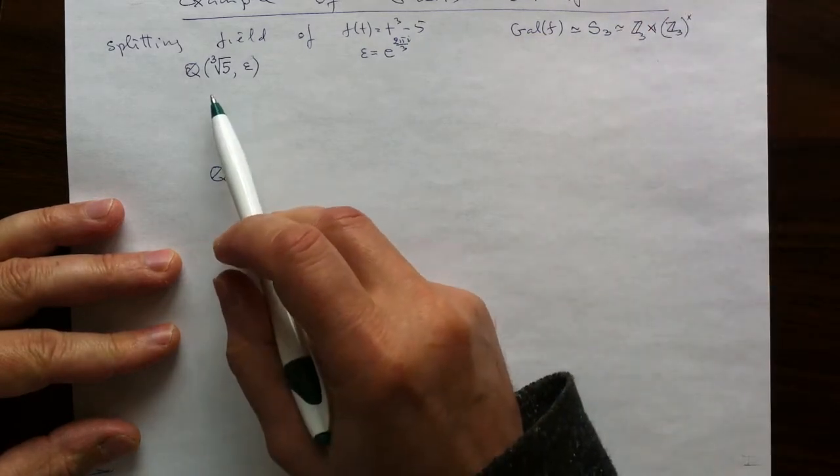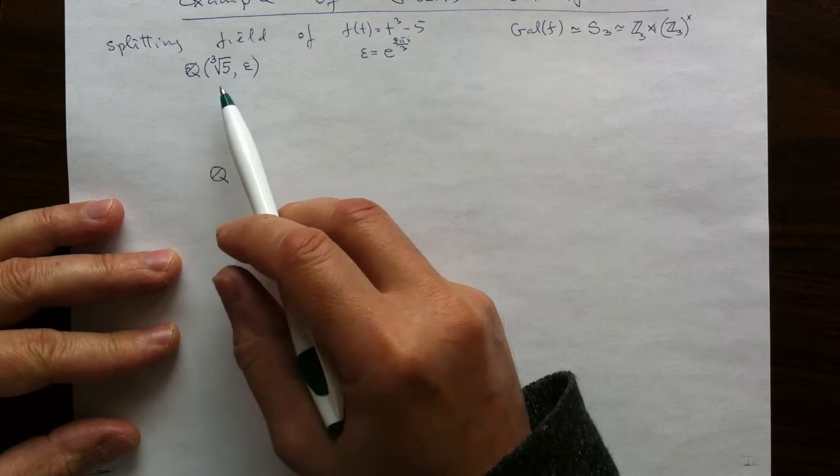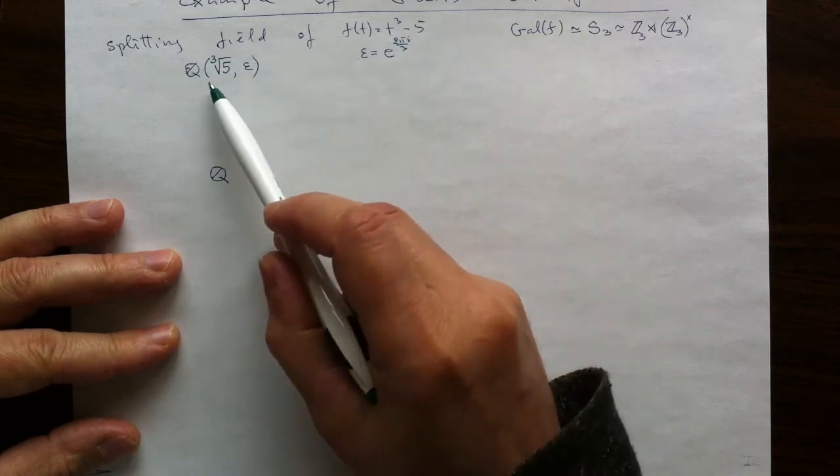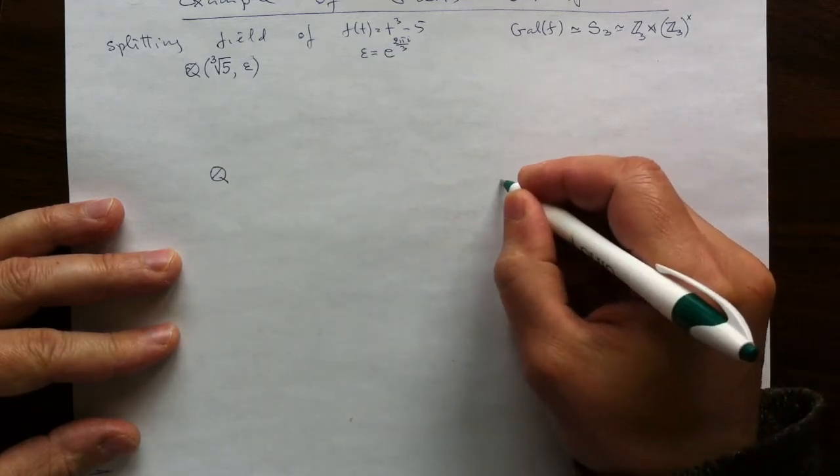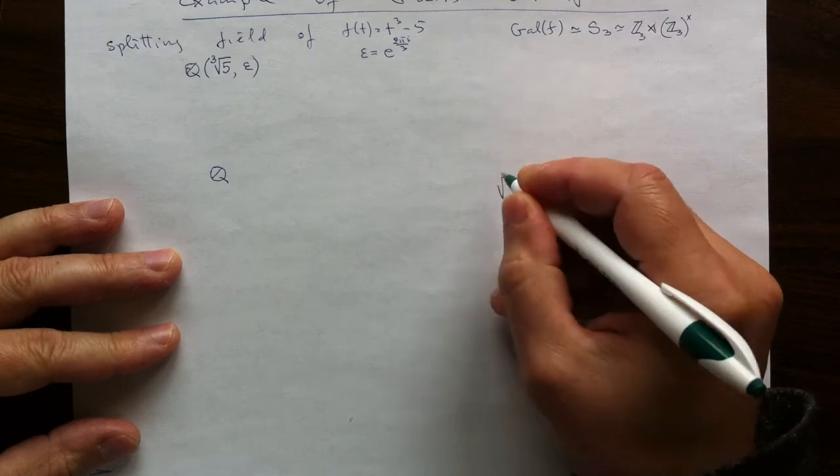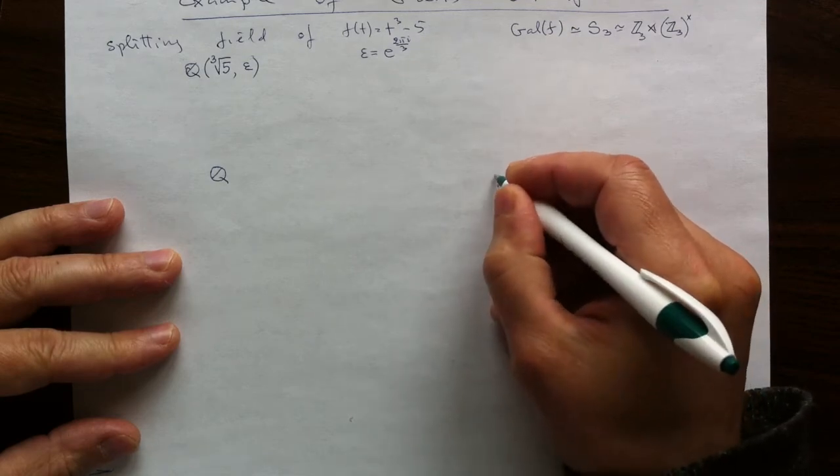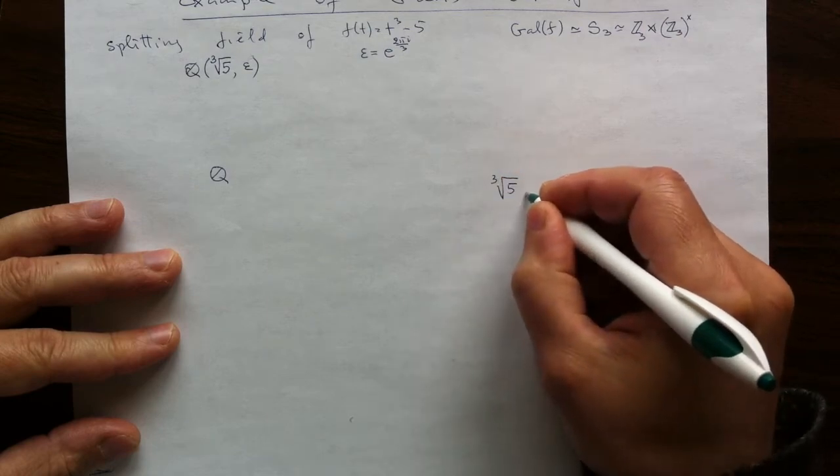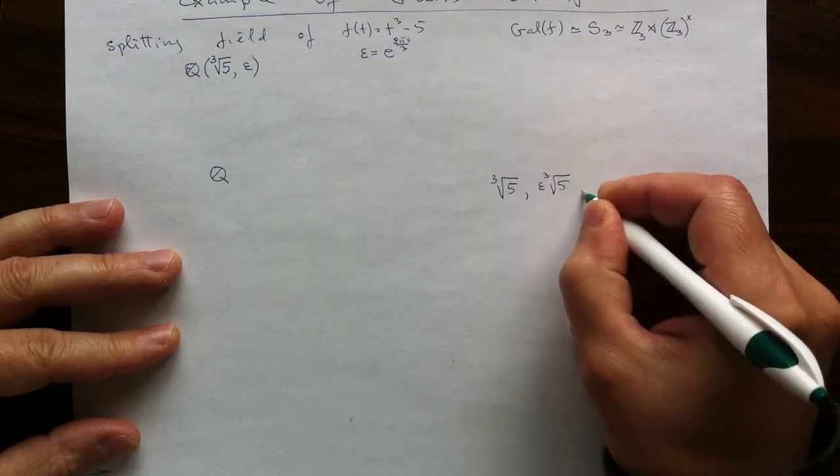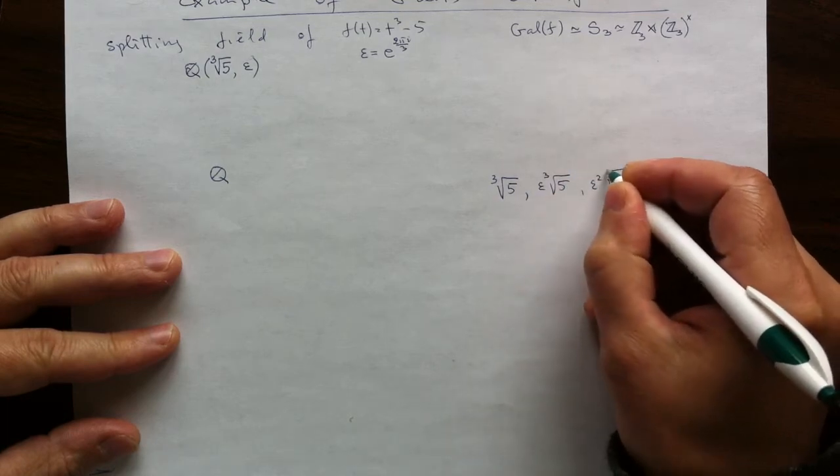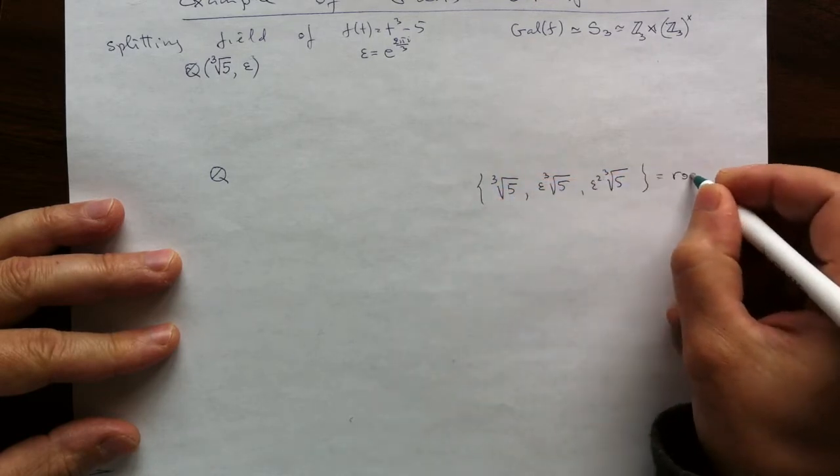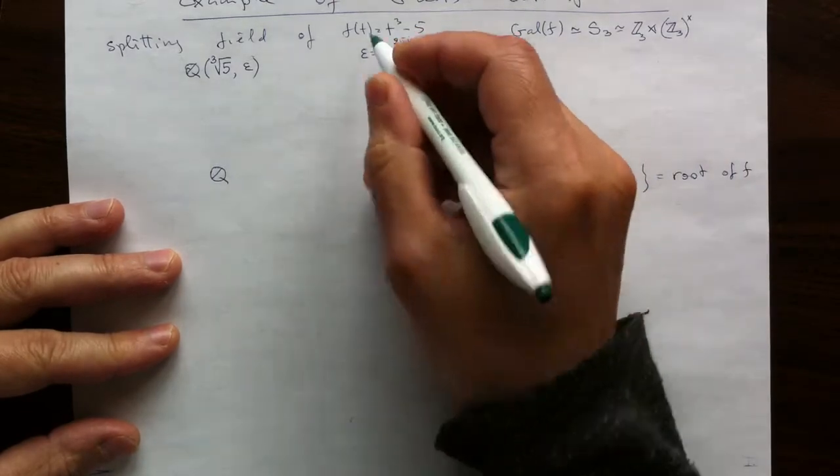So all in short, we could just say that the splitting algebra of this polynomial is the splitting field. So if we look at, let's say, the complex roots, degree 3 root of 5, the real one, and then say epsilon, the degree 3 root of 5, and epsilon squared. So these are all the roots of our F here.